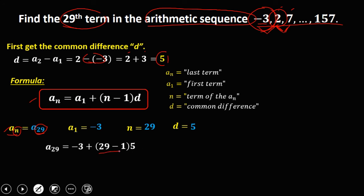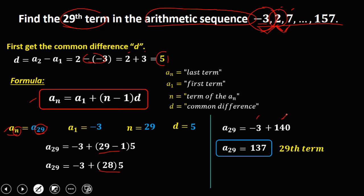Then this 29 minus 5, that's 28. And 28 times 5, that's 140. And negative 3 plus 140. Therefore, a sub 29 is 137, and this 137 is the 29th term in this arithmetic sequence.